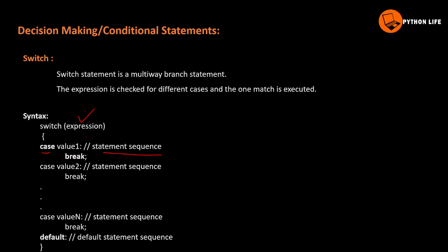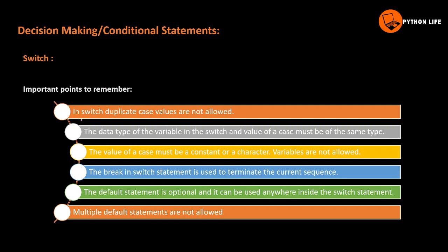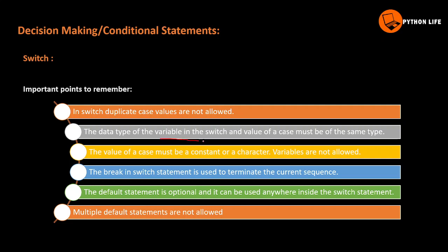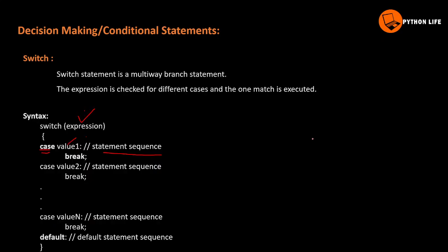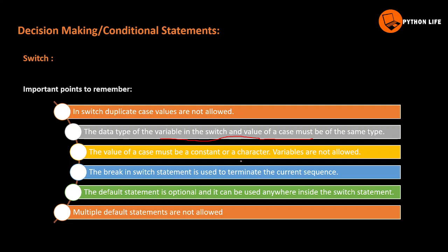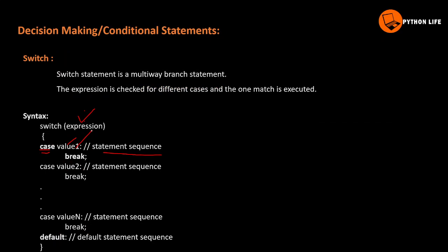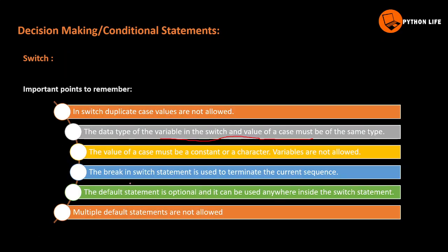In the switch statement, you can see case values here. In switches, duplicate case values are not allowed. Case values are keywords. The data type must be the same — the value of the case must match the expression's type. A case value can contain a character or number, but variables like A, B, C are not allowed as case values. Double quotes are the same as single quotes for characters.